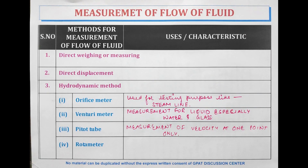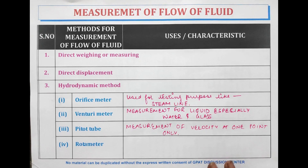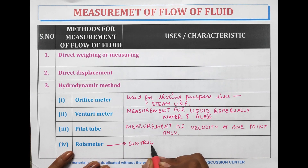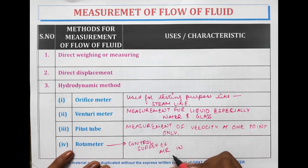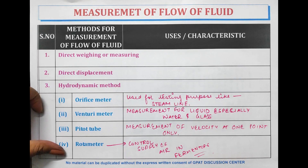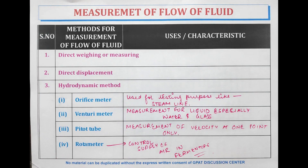After the venturi meter and pitot tube, a rotameter is used. The function of the rotameter is that it is used in chemical industries such as bulk drug fermenters, where the supply of air is controlled through the rotameter. So the main function of the rotameter is to control the supply of air in fermenters. These were the instruments used in the hydrodynamic method.